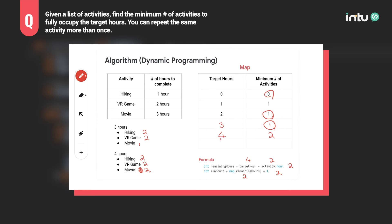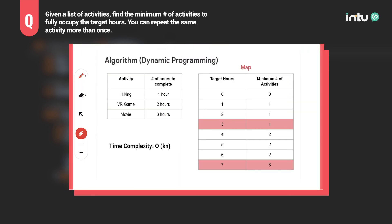You continue doing this until your target hour N, and this gives you the minimum number of activities to fully occupy the target hours. I pre-calculated the numbers up to target hours equal seven — as discussed in our example, we can see the minimum numbers for target hours three and seven match our earlier answers. The time complexity is O(k × n), where k is the target hours and n is the number of activities. Spend some time to understand this algorithm and translate the idea into code, then compare with the full solution in the description below. I hope this video helped you prepare for technical interviews — don't forget to like and subscribe!